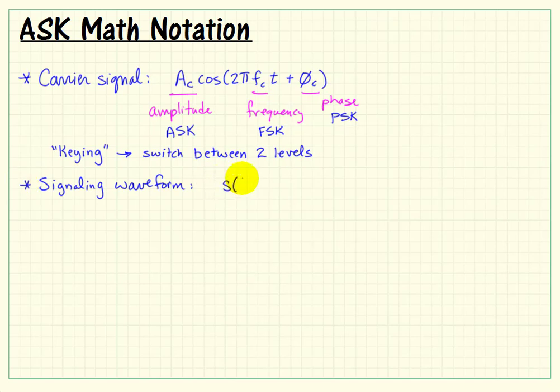Now, the signaling waveform that ultimately is getting transmitted is called s of t. And this is formed of our binary message, b of t, which multiplies the carrier signal, c of t. So c of t is the same as that carrier signal that I wrote earlier, and that's our binary message.